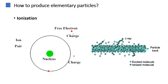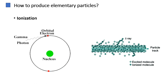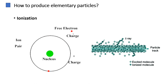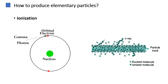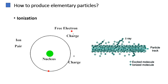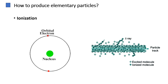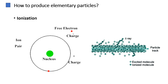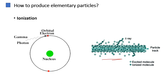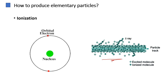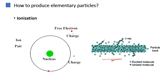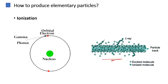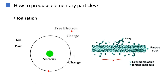Ionization is the process in which an atom or a molecule gains or loses electrons, resulting in the formation of ions. In particle physics, detectors often rely on ionization caused by particles passing through a medium. When charged particles interact with atoms or molecules, they can knock electrons out of orbit, creating ion pairs that can be detected to identify and measure the passage of particles.